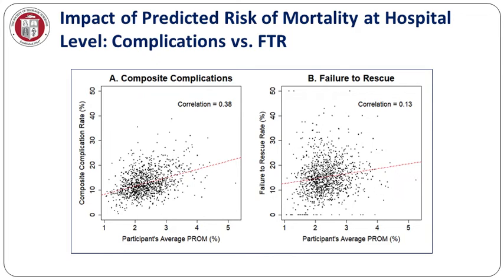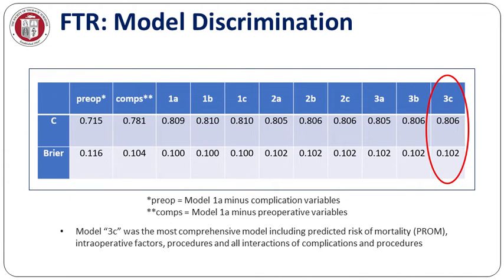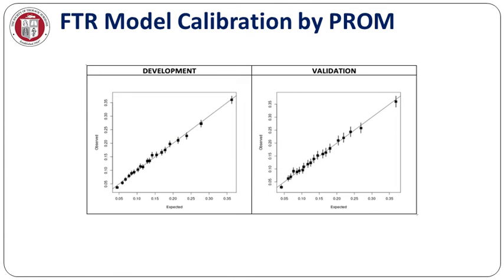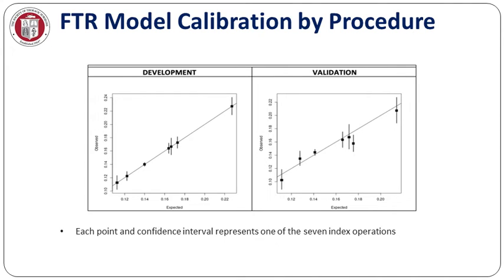After arriving at the most comprehensive model after several iterations — including the predicted risk of mortality, intraoperative factors, procedures, and all interactions of complications with the procedure — we arrived at a model with the highest discrimination. We had excellent calibration as observed versus expected failure to rescue, and excellent calibration across the spectrum of predicted risk of mortality and also across the spectrum of procedures, with each dot here being one of the seven procedures.